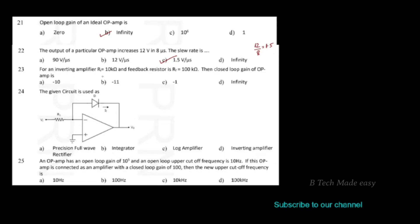Next question: for an inverting amplifier, Ri is equal to 10 kΩ and the feedback resistor Rf is equal to 100 kΩ. Then the closed loop gain of the op-amp is: the closed loop gain equals minus Rf divided by Ri, which is minus 100 kΩ divided by 10 kΩ, giving minus 10. Option A is the correct answer.